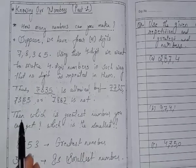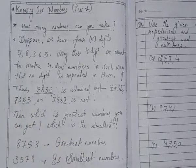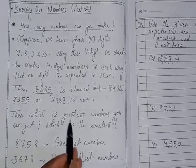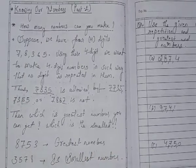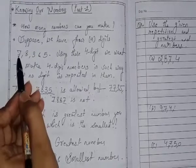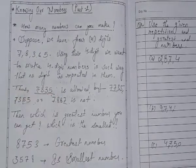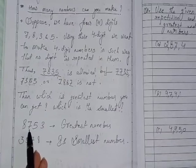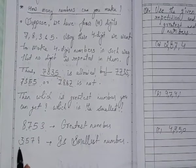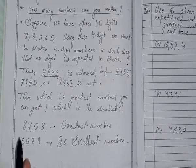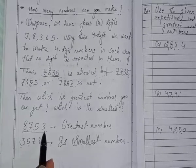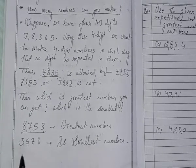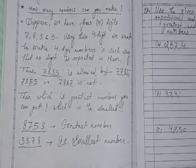So then when we make the digits we have to find out which is the greatest number you can get and which is the smallest. So using digits 7, 8, 3 and 5 we can make 8753 and 3578.